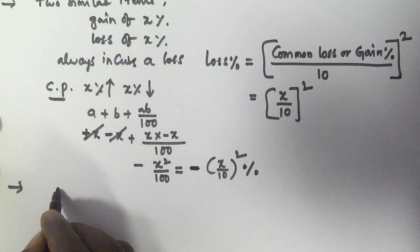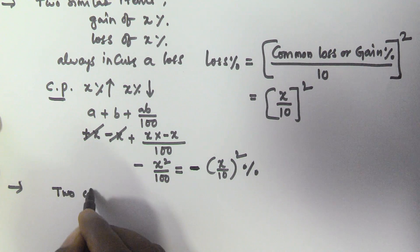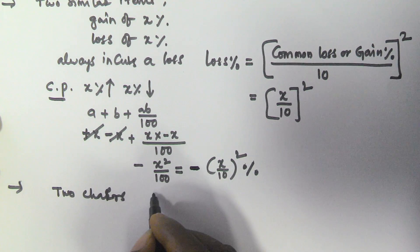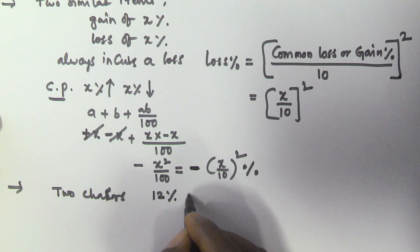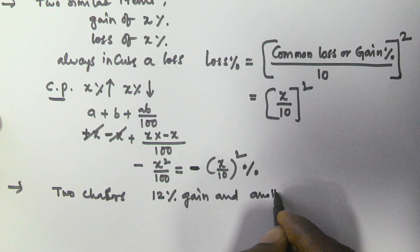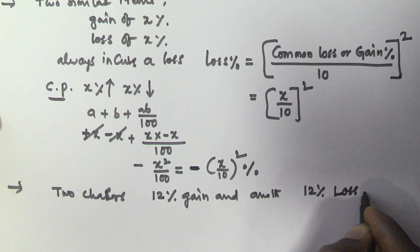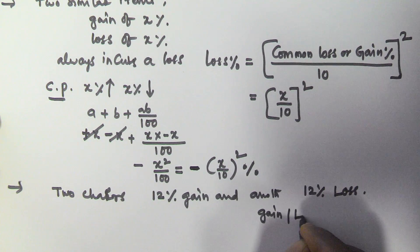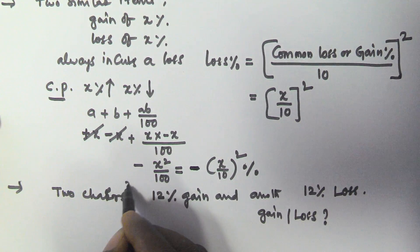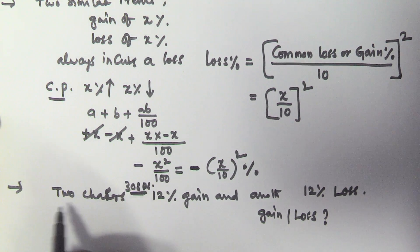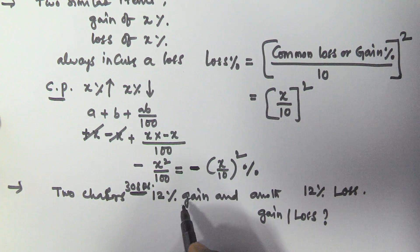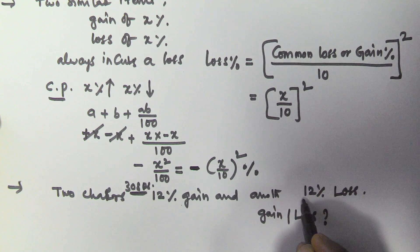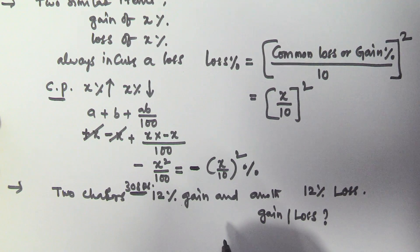Let us assume there are two similar chairs. One is sold at 12% gain and another is sold at 12% loss. We have to find the overall gain or loss percentage. Each chair's selling price is 308 rupees — one chair is sold at 308 rupees incurring a 12% gain, and the other is sold at 308 rupees incurring a 12% loss. We need to find the overall gain or loss percentage for the seller.